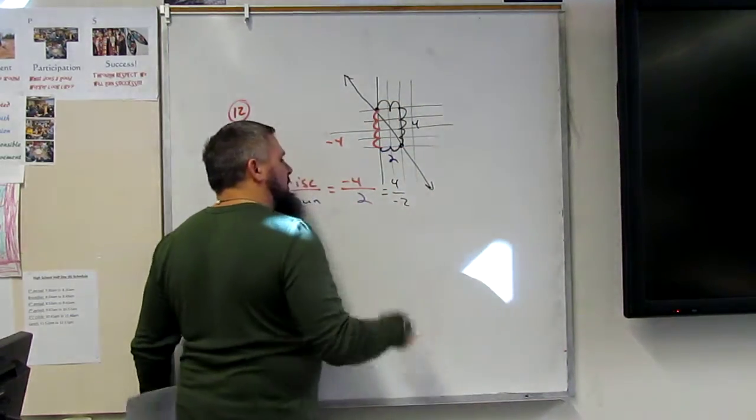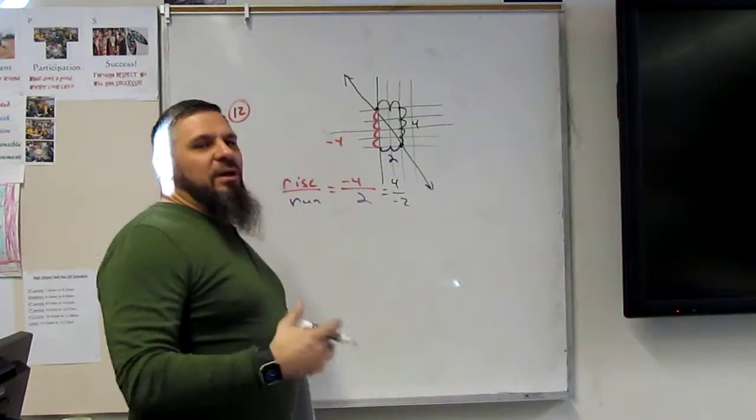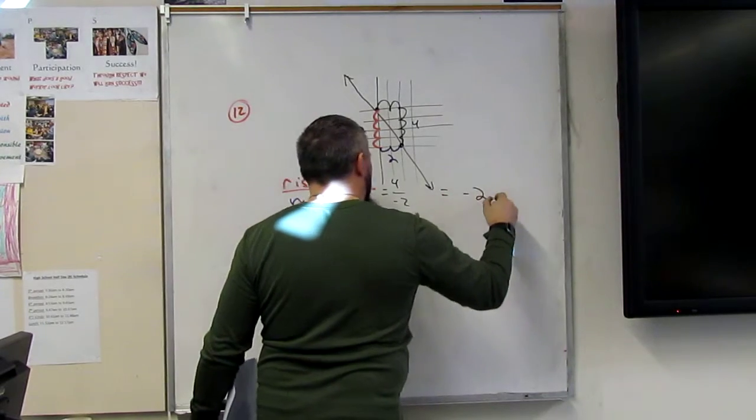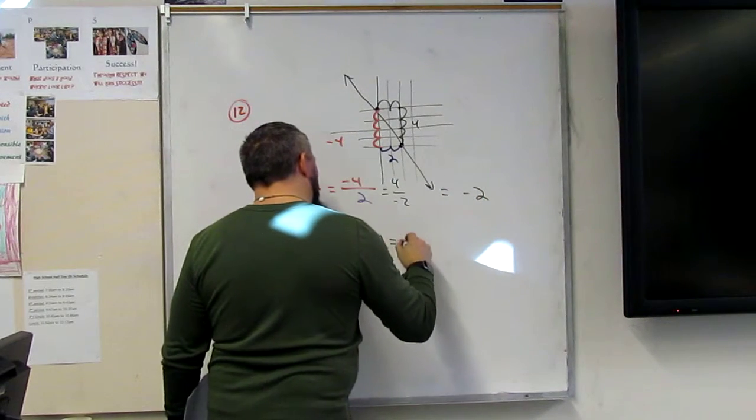Negative 2, right? In either case, what is 4 divided by negative 2? 2. Negative 2. Negative 2. So the slope is equal to negative 2.